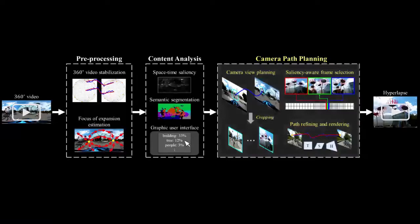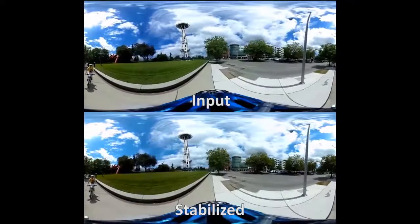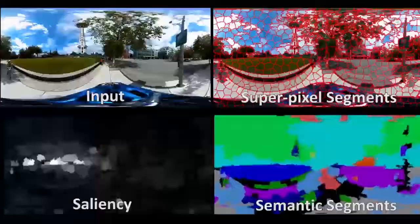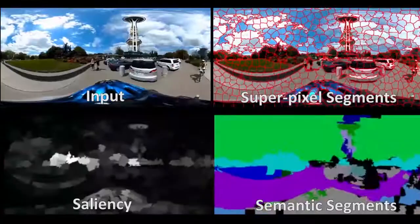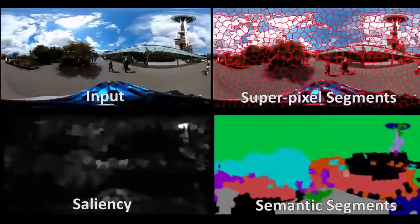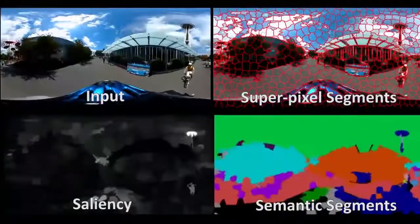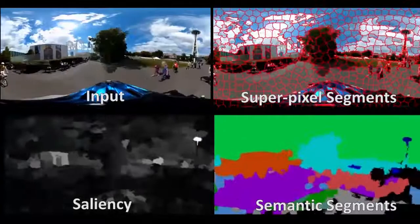We first stabilize to smooth out distracting camera motion using our panoramic video stabilization algorithm. Next, we over-segment the 360 video into temporal superpixels and compute a saliency score based on visual and motion features. We assign a semantic label for each temporal superpixel using FCN segmentation. The semantic labels are used to drive the region of interest and hyperlapse speed in our final results, such that interesting areas are visible in the resulting hyperlapse.